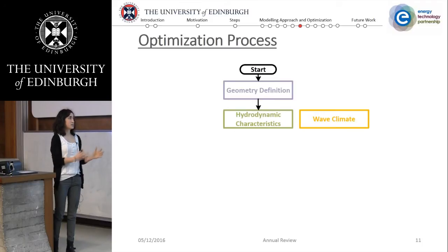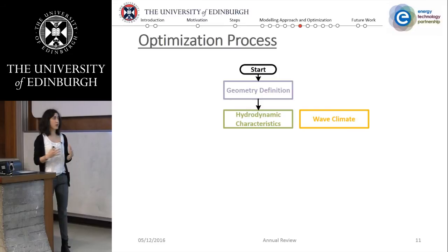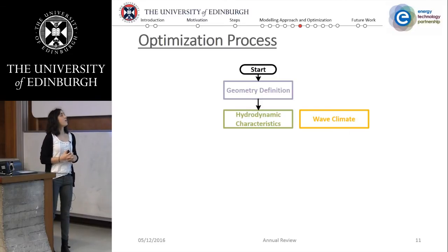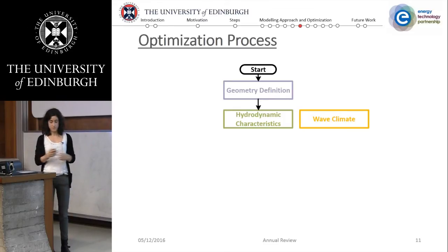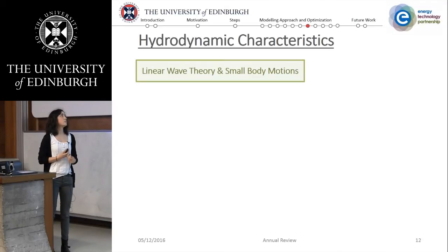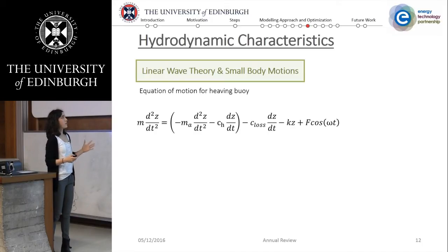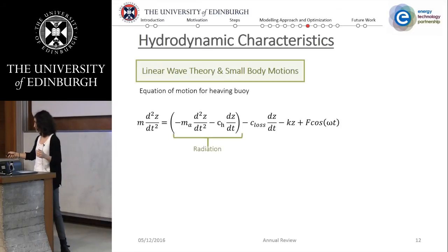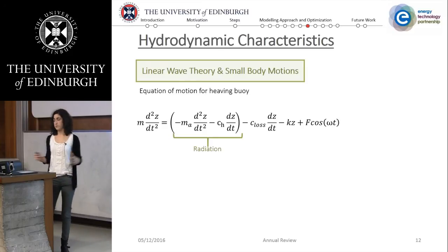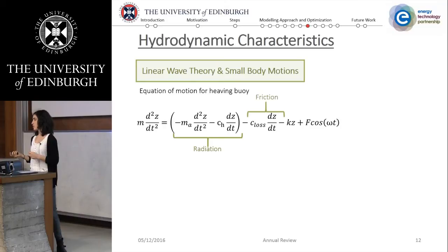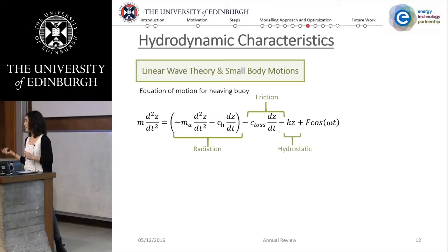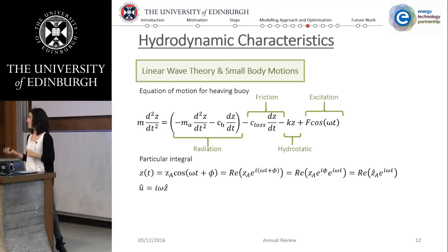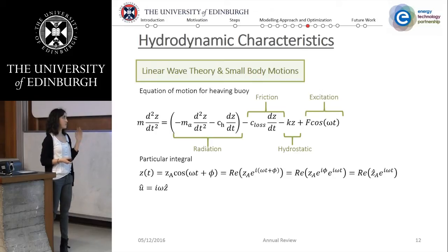Once we know the shape and how to represent the wave climate, we can calculate the hydrodynamic characteristics of the device. We assume linear wave theory and small body motion. For the equation of motion of a heaving buoy, the main terms are the radiation force due to displacement of water through device motion, the friction losses, the hydrostatic force, and the excitation force. You can solve this differential equation with the particular integral.